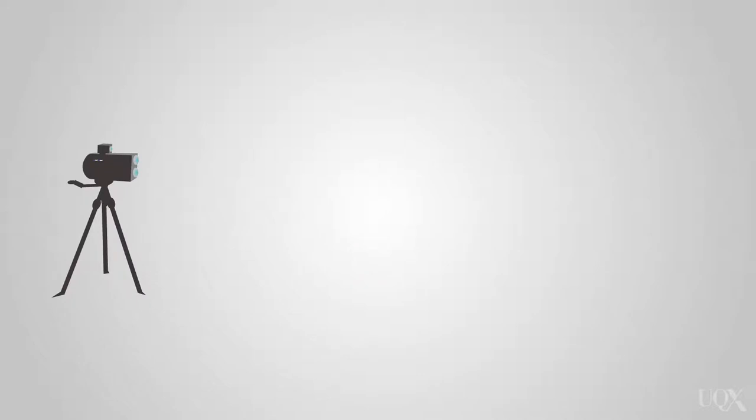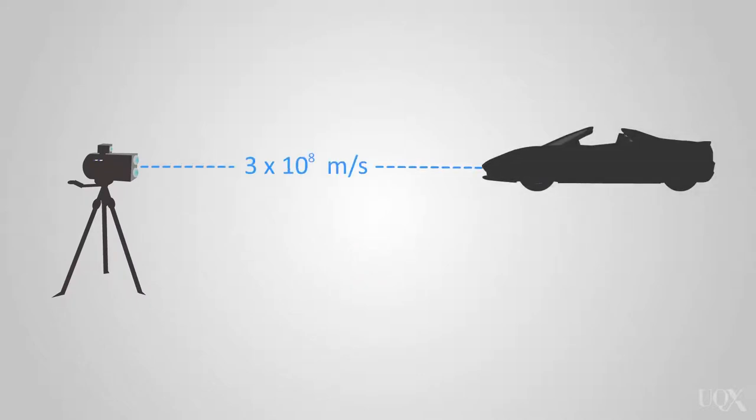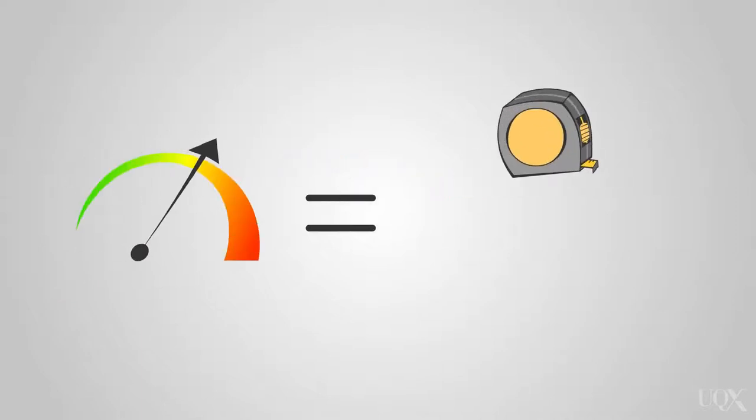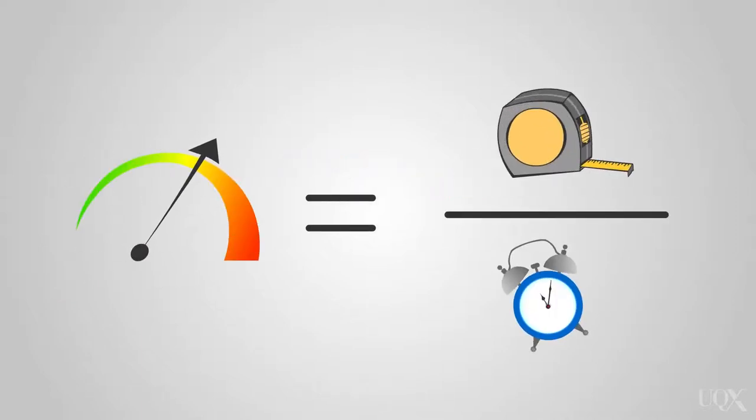Let us look at one possible source of errors in the readings. We know the speed of light is finite at 3 times 10 to the power of 8 meters per second. It takes a finite time for the light to travel from the LIDAR unit until it reaches the car. Meanwhile, the car has moved a little closer to the LIDAR unit. Knowing that speed is distance divided by time, if the distance is reduced, then the speed measured will be higher than the actual speed.